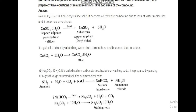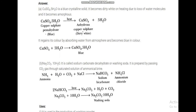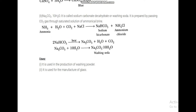The third reaction is: Na2CO3 + 10H2O → Na2CO3·10H2O. This step shows crystallization — the hydrated salt or water of crystallization is added. So, Na2CO3 plus 10H2O gives us Na2CO3·10H2O. These three steps are important for the preparation of washing soda.